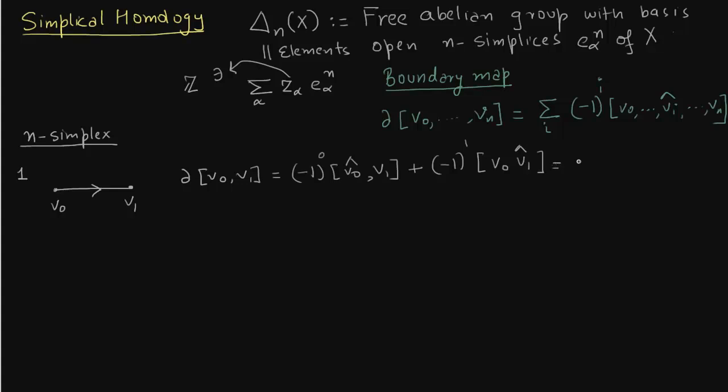So this is now we are going to write as v1 because v0 was not in the expression. So v1 minus v0. So this takes into account the orientation.